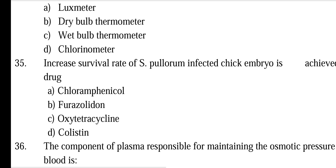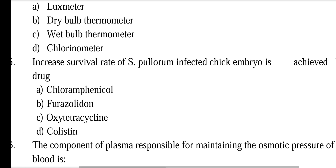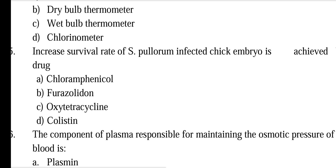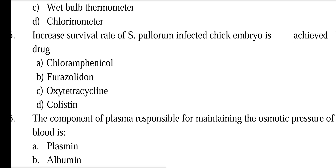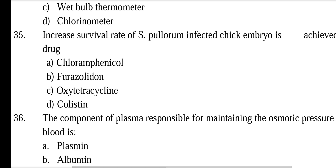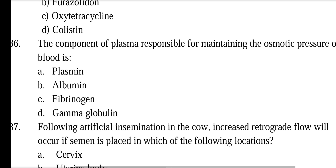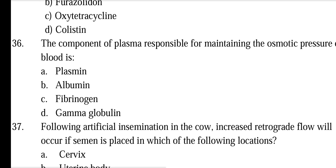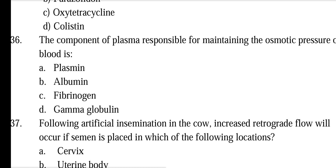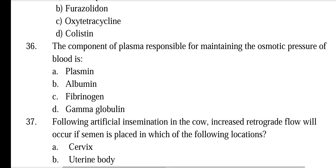35th question: Increased survival rate of S. Pullorum infected chick embryo is achieved by which drug? Options: Chloramphenicol, Furazolidin, Oxytetracycline, Colistin. The answer is Colistin — it increases the survival rate of S. Pullorum infected chick embryo. Also, plasma is needed to maintain the osmotic pressure of blood.